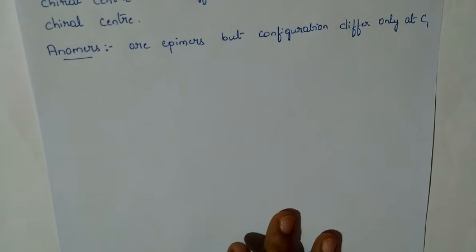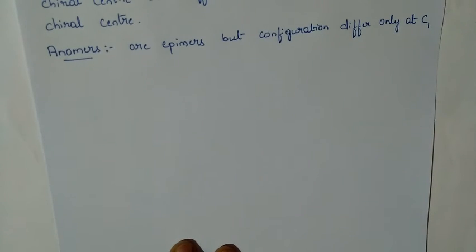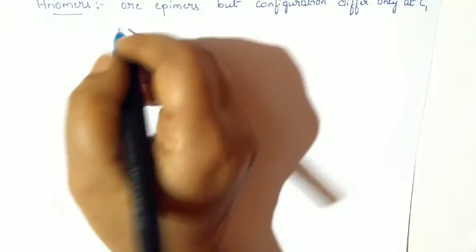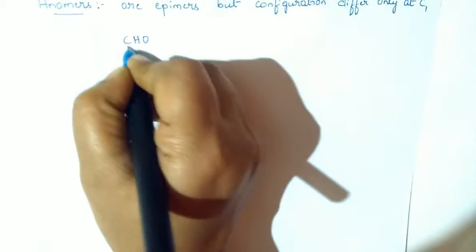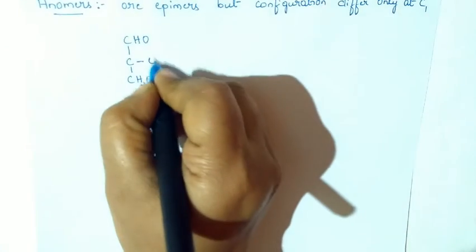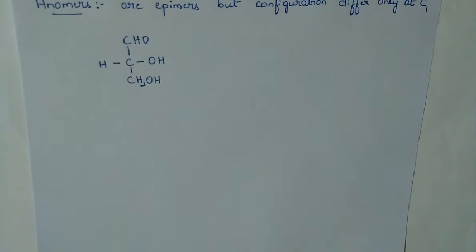Enantiomers are compounds that form non-superimposable mirror images. If two compounds form non-superimposable mirror images, they are called enantiomers. Now we shall discuss the chart starting with glyceraldehyde — the 3-carbon compound, which is the first member of monosaccharides.